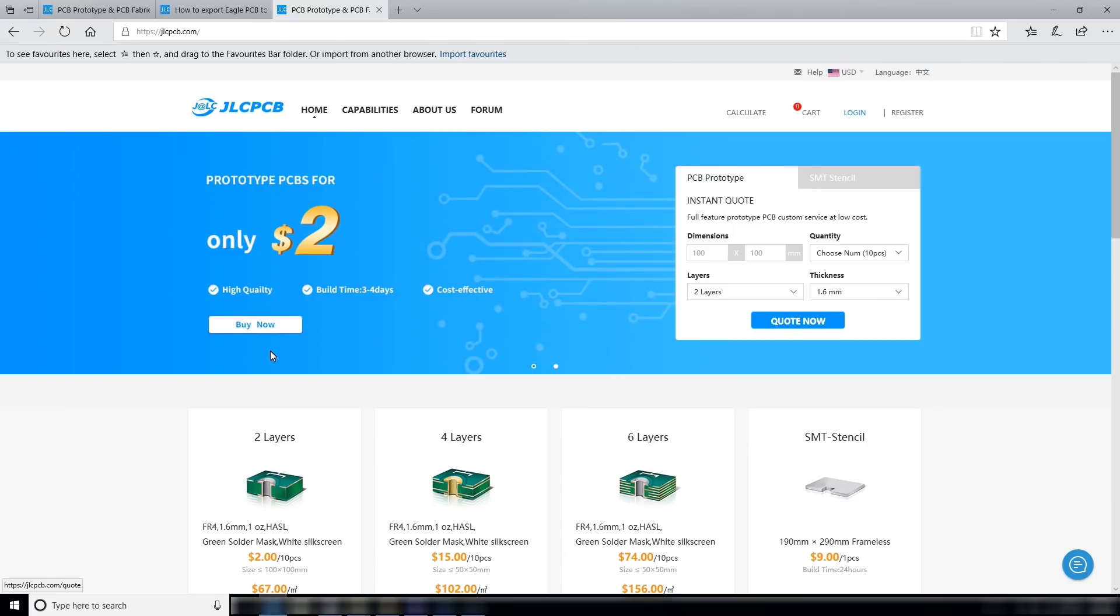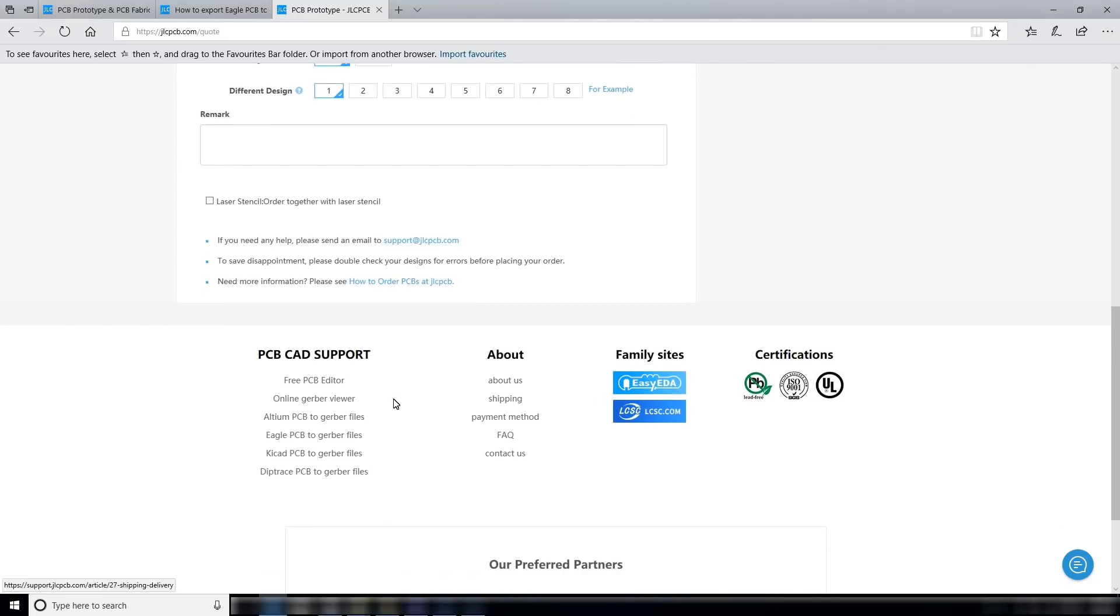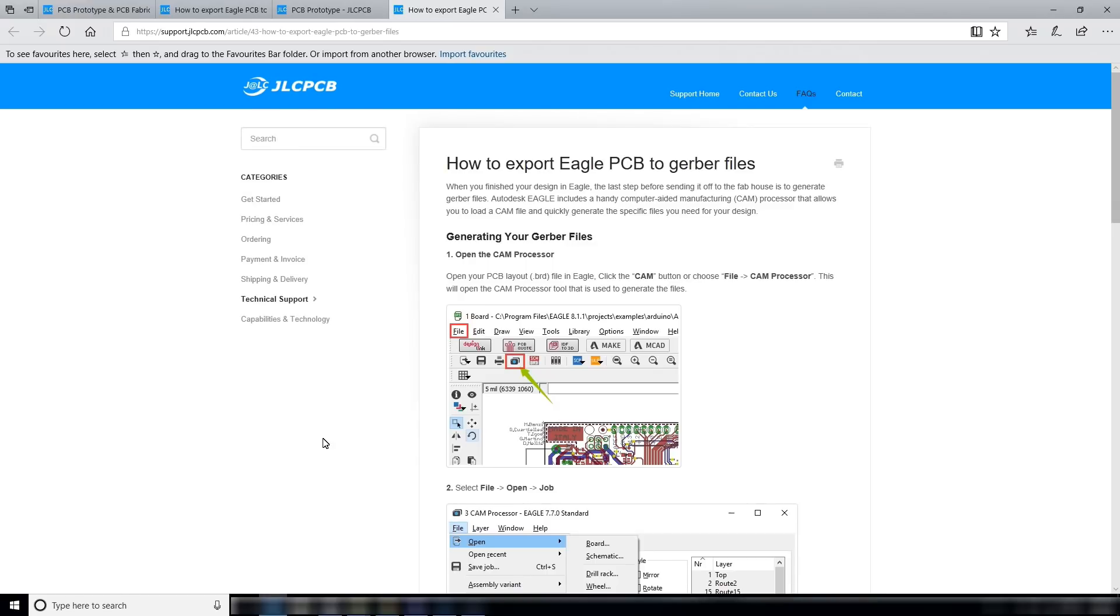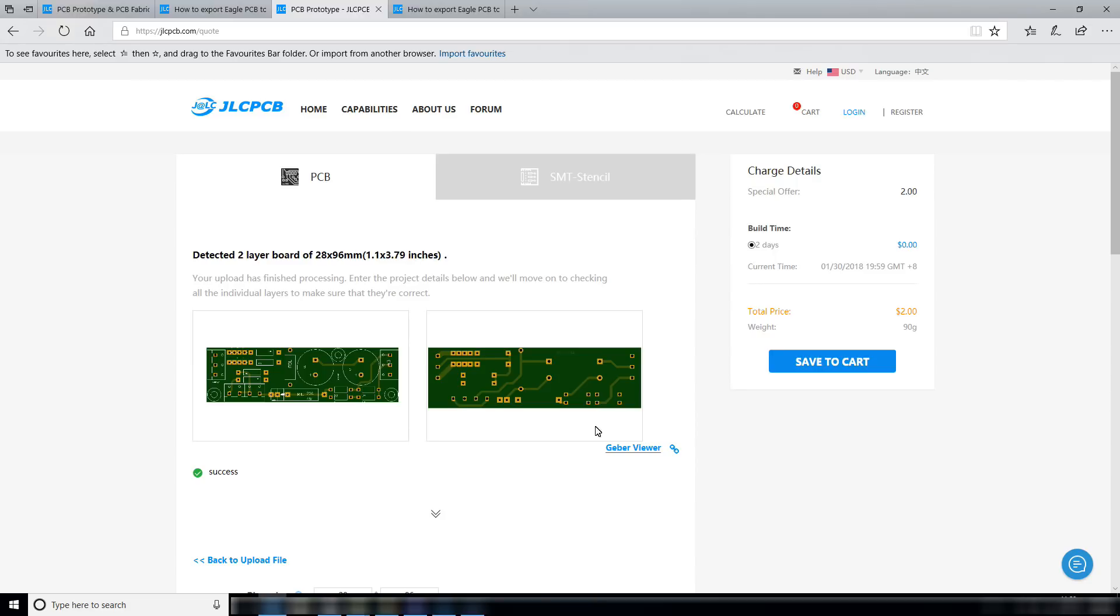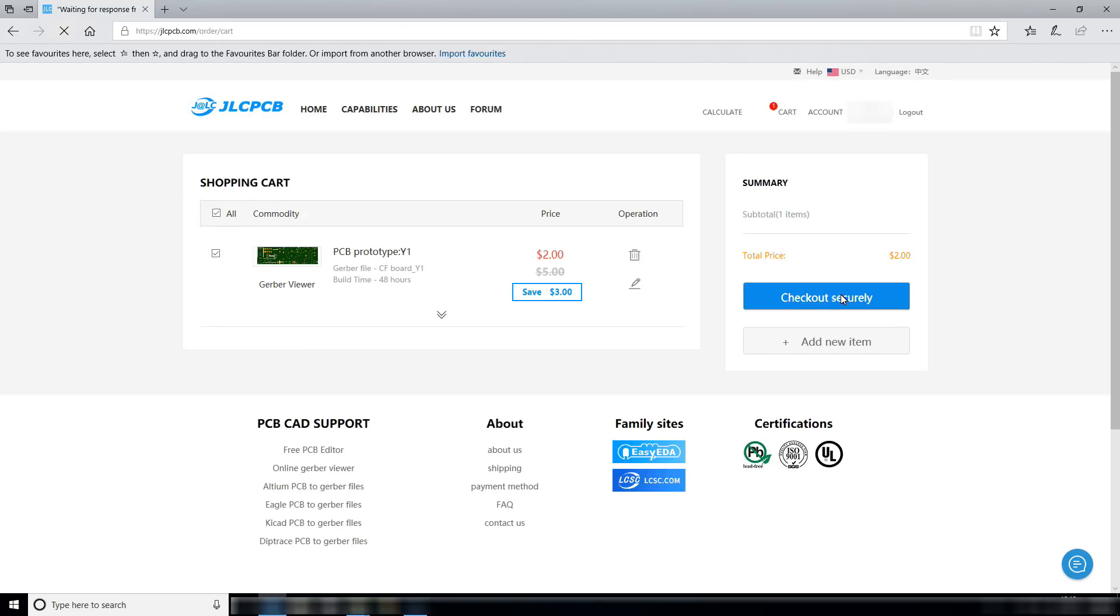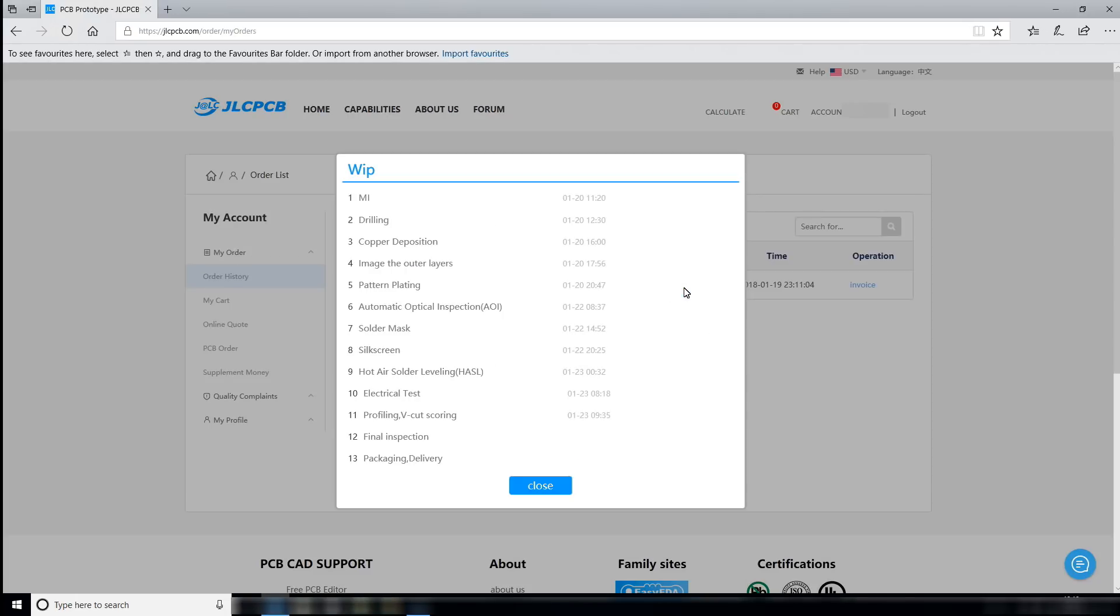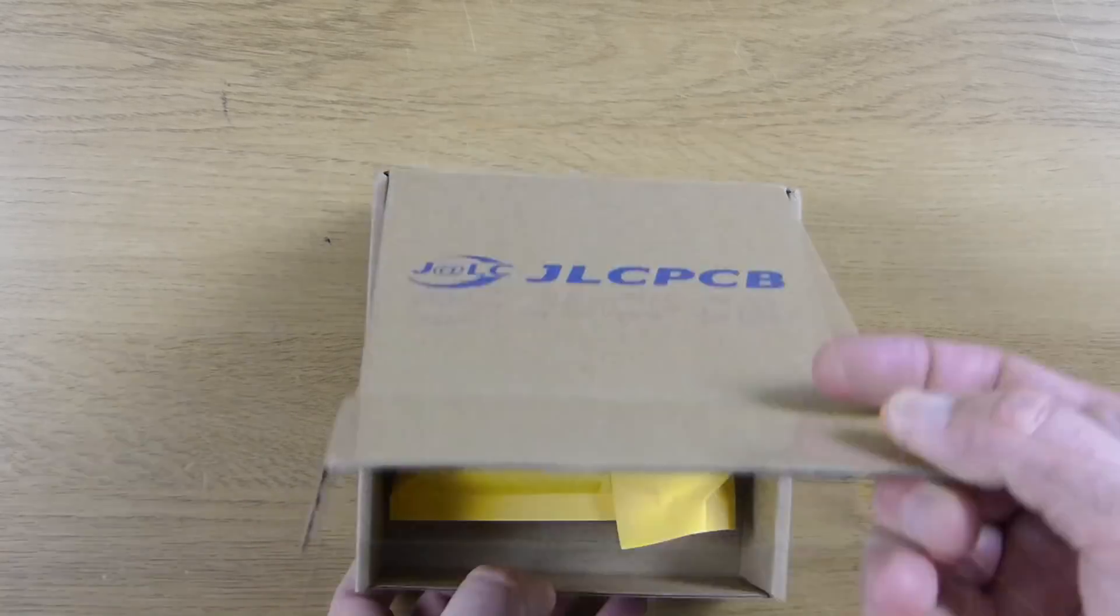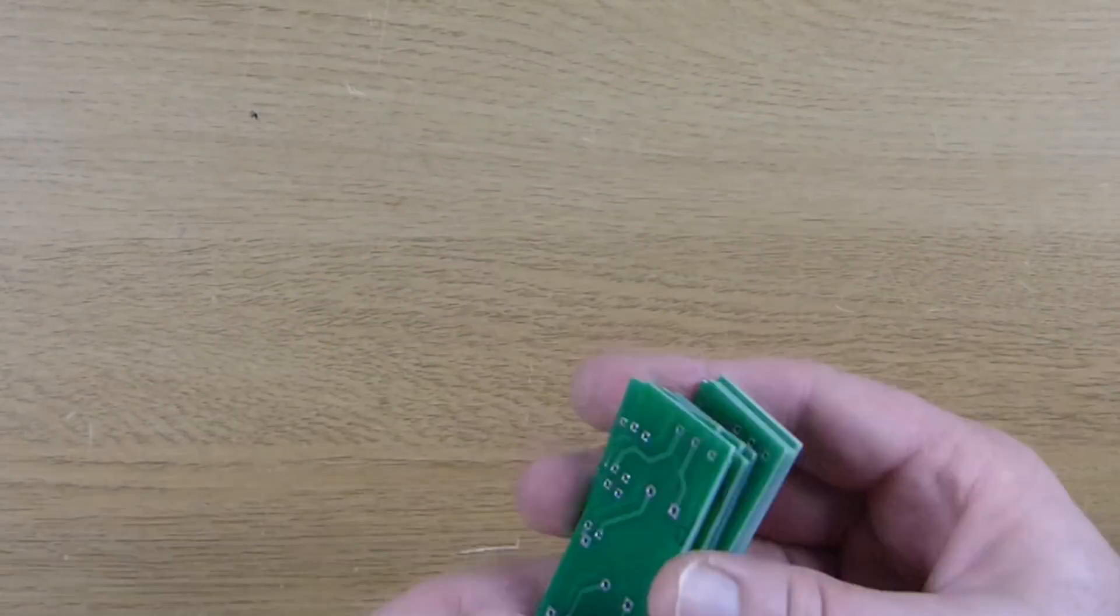This video is sponsored by JLCPCB where you can order high quality custom printed circuit boards for extremely low prices. Currently as low as $2 for 10 double sided PCBs with free shipping on your first order. Design the PCB using your favorite software and upload the Gerber files to the JLCPCB website. Review the design using the Gerber viewer and then securely check out to receive the free shipping offer. You can check the order status online at any time. The quality of the PCBs is excellent and at this price it's a great way of turning your designs into quality products.